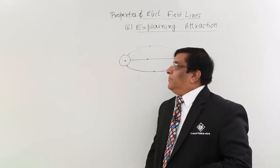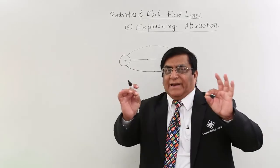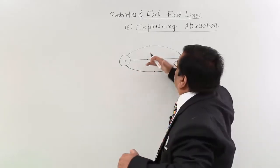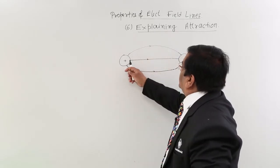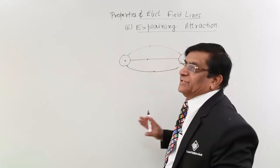Electric field lines behave like stretched strings. We have taken a rubber band and stretched it. It has become like this - a rubber band strip. We have stretched it and it has come to this shape.